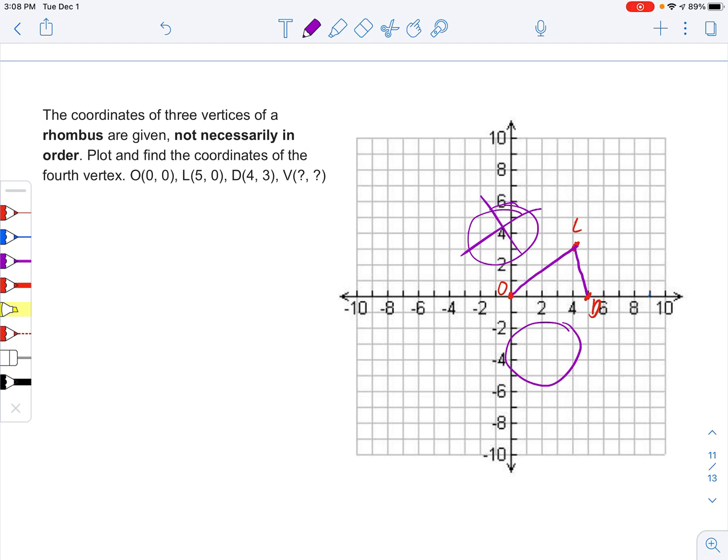If we try a point over here, those two sides that we have already aren't equal. And so it doesn't really matter where we put a point over here, it's not going to be a rhombus. We're not going to get equal sides, so that's out too.